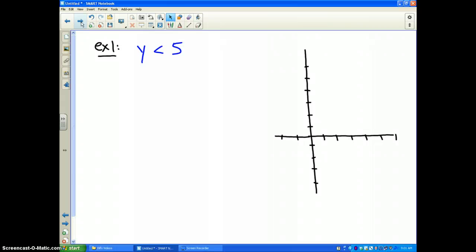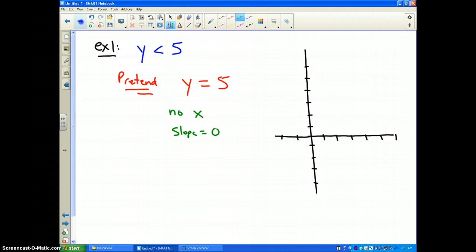Alright, example number one. We are going to graph y less than five. Now, when you graph an inequality, pretend that the symbol is equal to. Now, we've already studied equations like y equals five. Since there is no x value, that means that the slope is equal to zero.